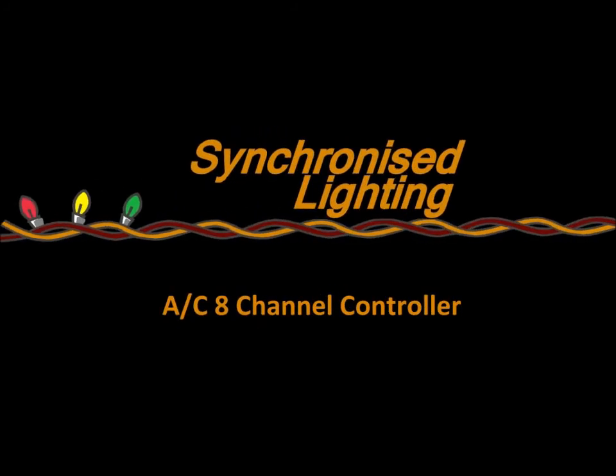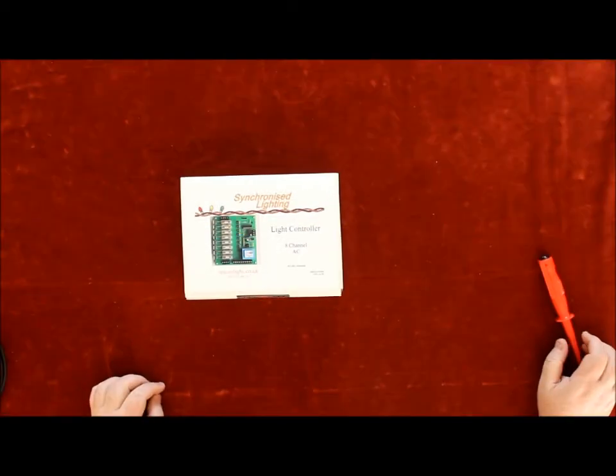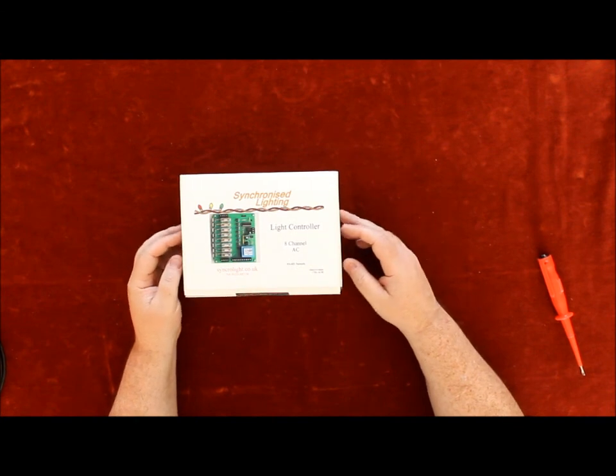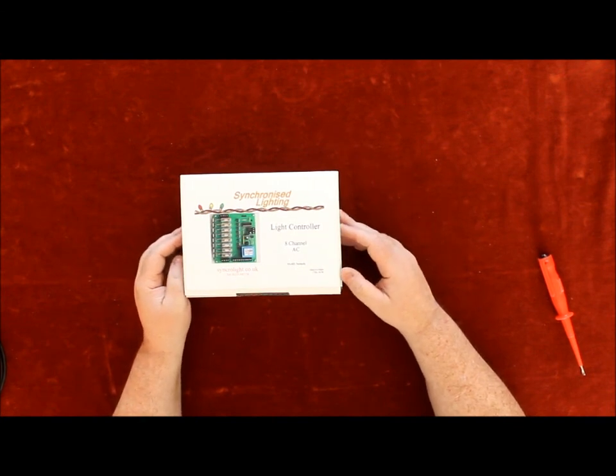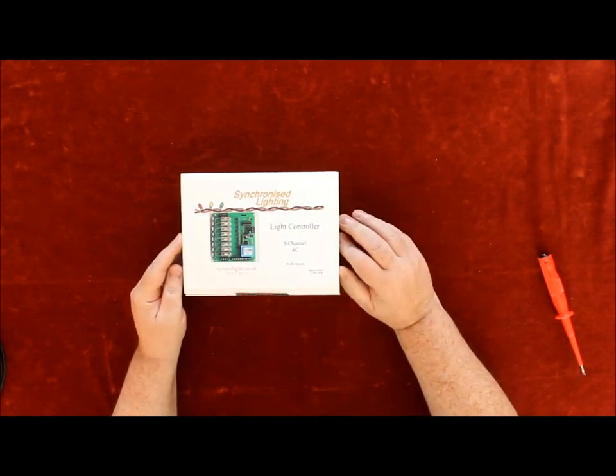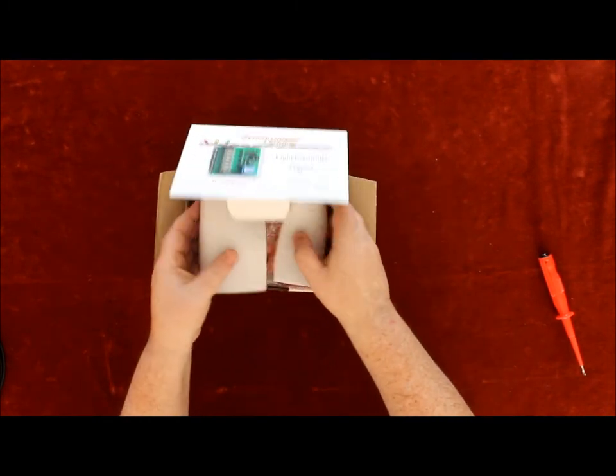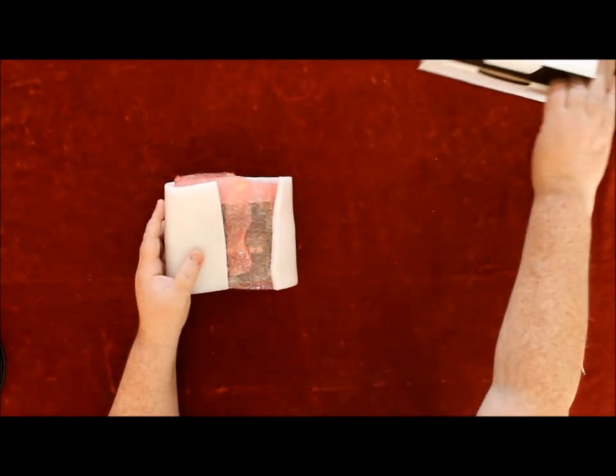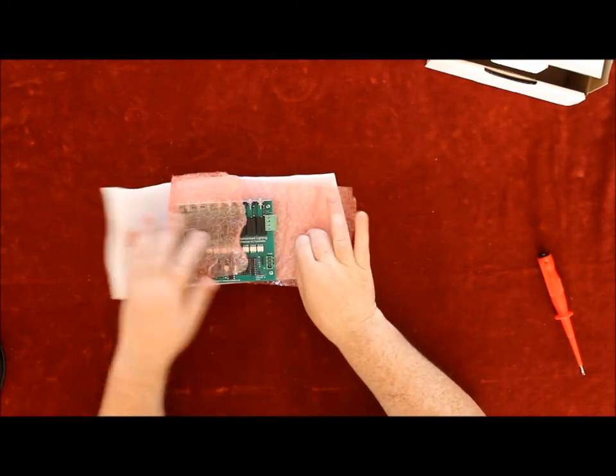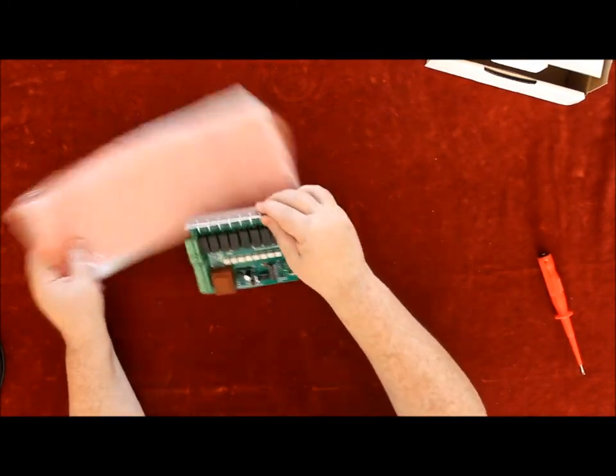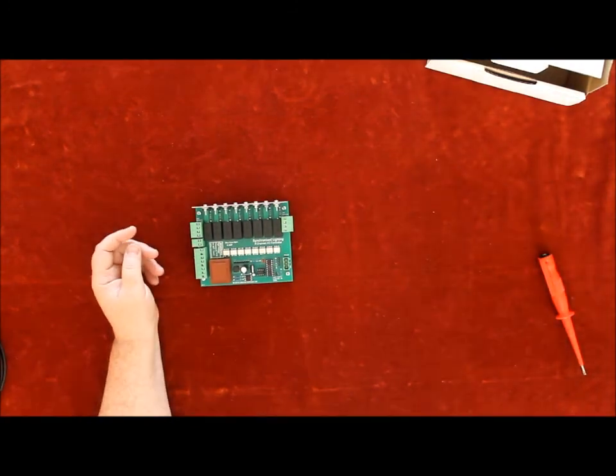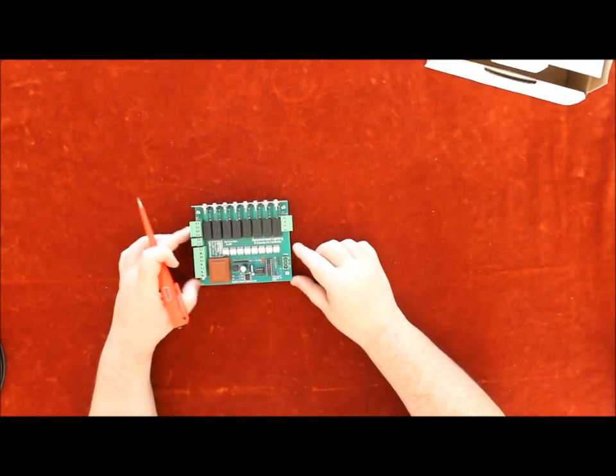Hi, welcome to Synchronized Lighting product videos. In this video we will teach you how to set up and run your product. This is an 8-channel AC controller. Caution: 240 volts, be careful. The quick explanation: it comes with a neutral block.